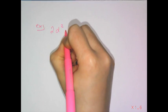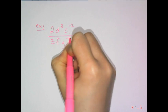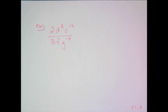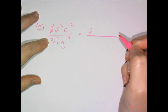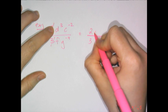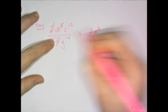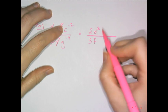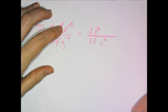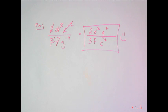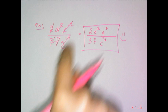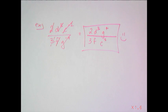Take 2d cubed c to the negative 2 over 3fg to the negative 4. The two negative exponents are what need fixing. The 2, 3, d cubed, and f all stay where they are. The c to the negative 2 is a negative exponent in the numerator, so it becomes c squared in the denominator. The g to the negative 4 in the denominator becomes g to the 4th in the numerator. That gives the simplified expression — no need to deal with fractions in fractions.